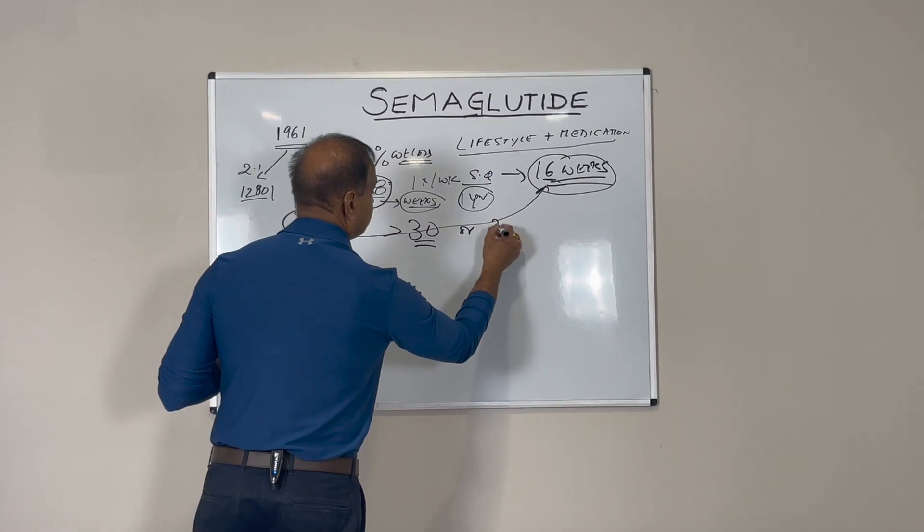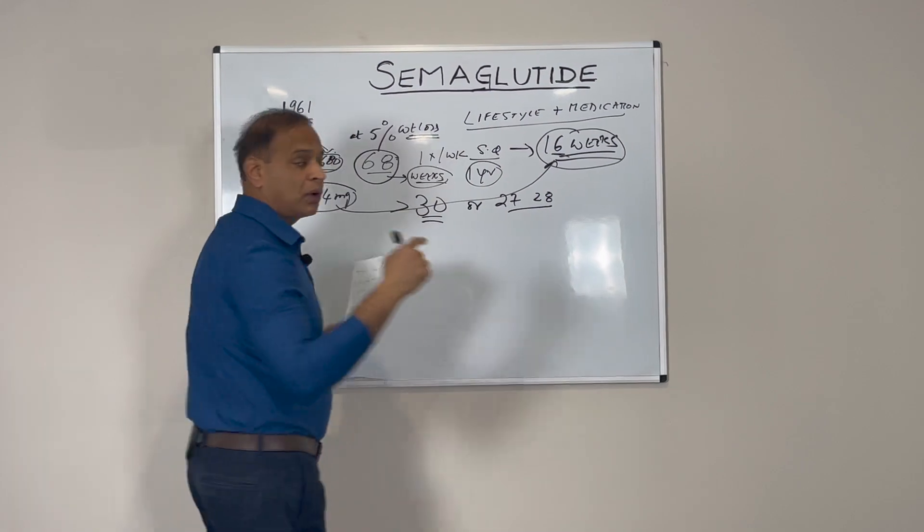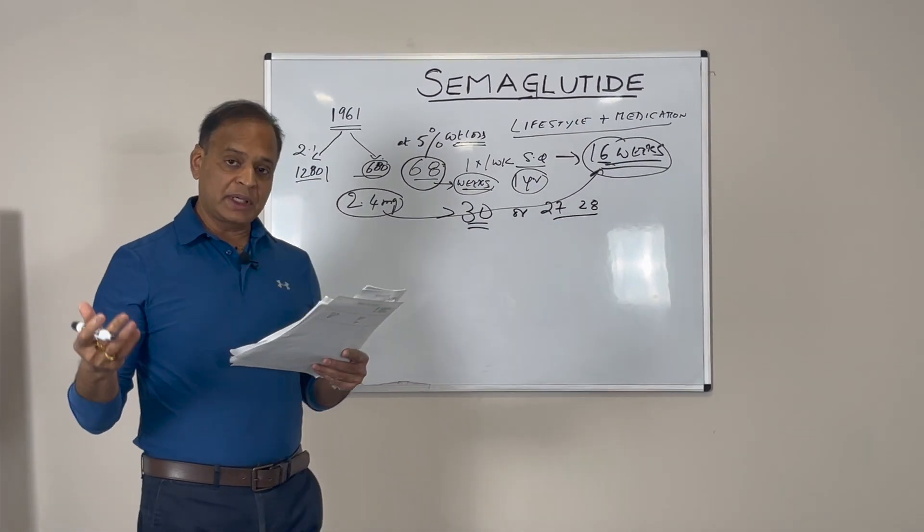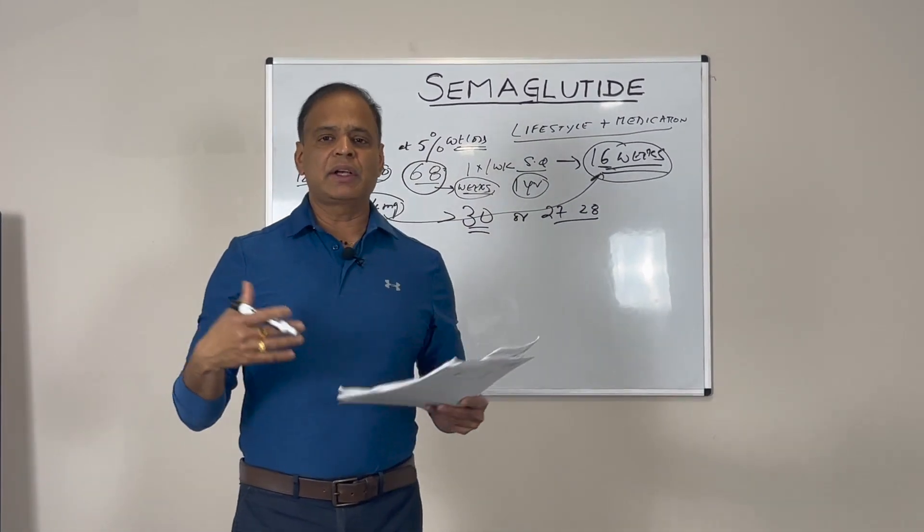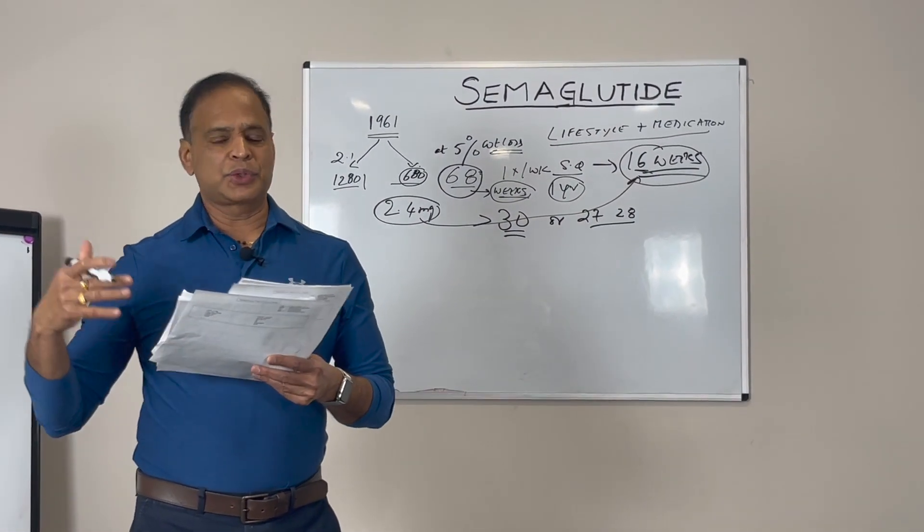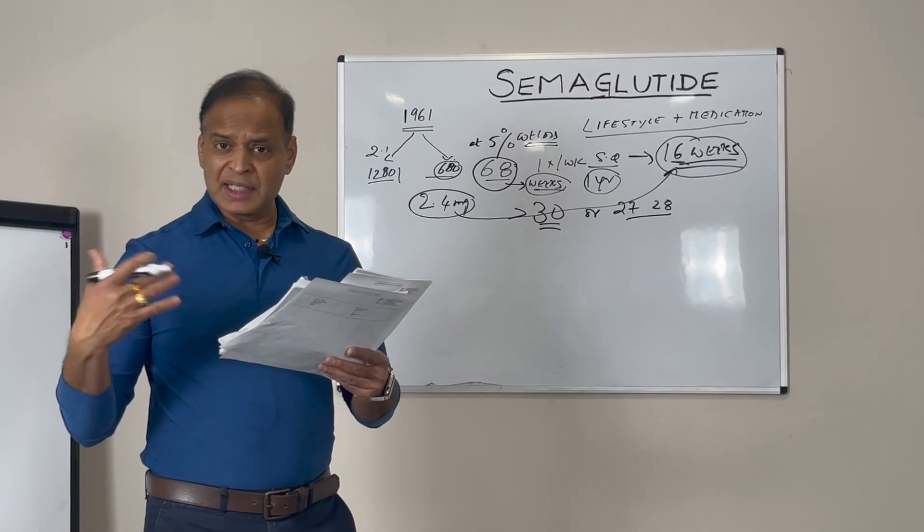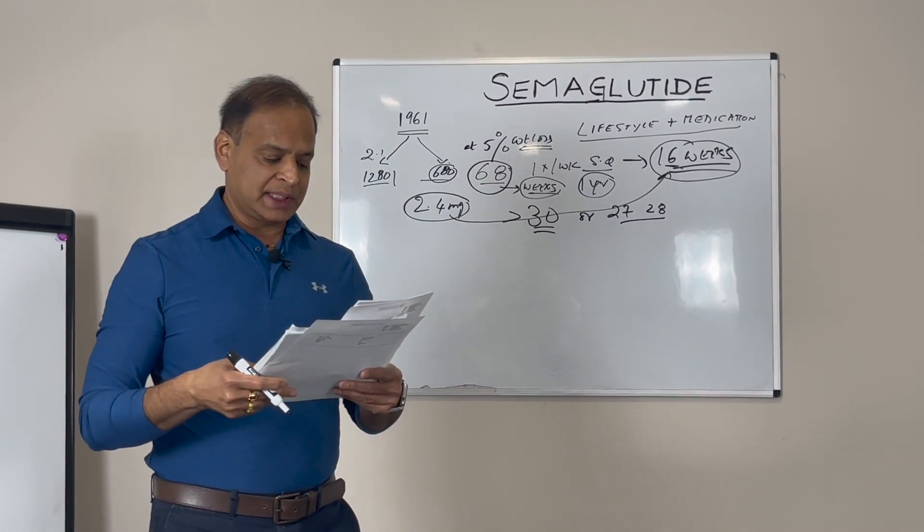Participants needed a body mass index of 27 or 28, meaning overweight with one to three comorbid conditions like hypertension, obstructive sleep apnea, or dyslipidemia, but not diabetes.